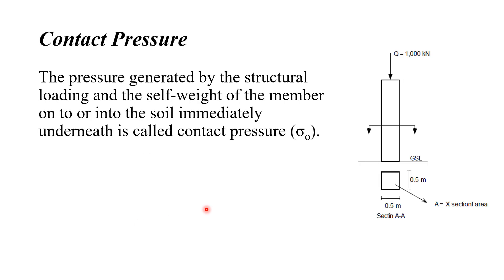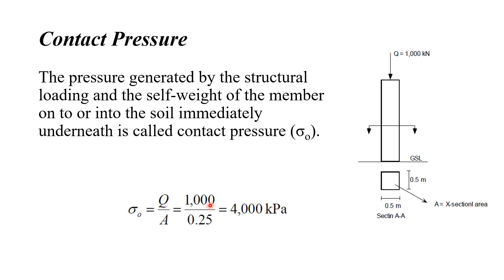Contact pressure is a very important terminology. It is the pressure generated by the structural loading and the self-weight of the member onto the soil immediately underneath. For example, here is a column with a load of 1000 kilonewtons coming from upper stories, and a cross-section of 500mm by 500mm (0.5m × 0.5m). The contact pressure is calculated as load over area: 1000 divided by (0.5 × 0.5 = 0.25), giving a contact pressure of 4000 kPa.